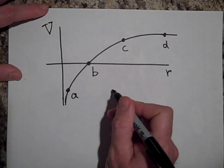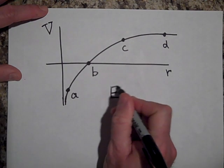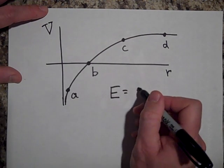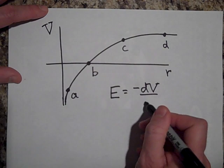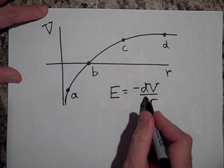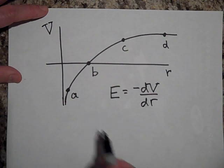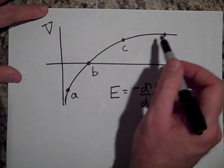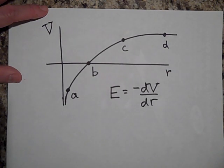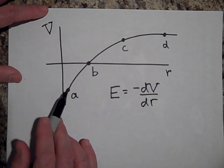Okay, well if you remember the electric field is negative dV dr, which means it's the slope of a V versus r graph. So I could have asked that same question by saying which point here of these has the greatest slope? And the answer is a has the most slope.